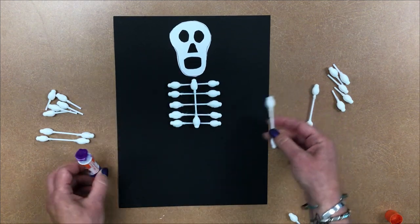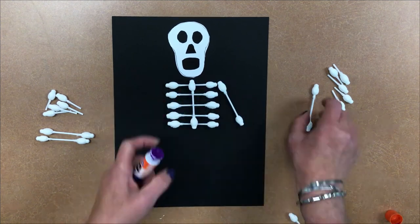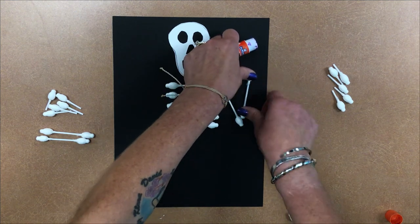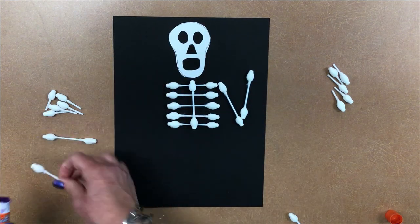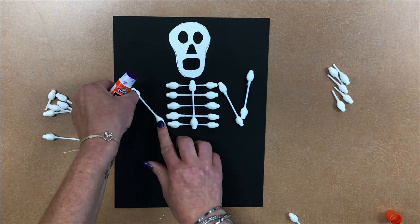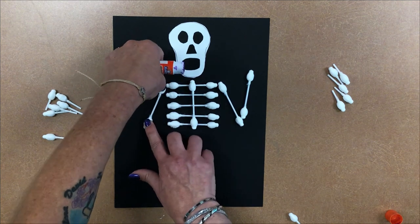Then we're going to do our arms. Now you can make them go any way you want. You can make a dancing skeleton. So we got two full Q-tips for the arms. I almost connected it the wrong way.